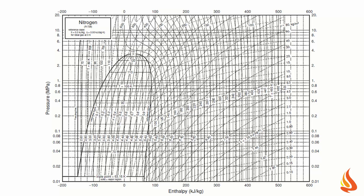The first step is to locate the point that corresponds to the condition of the input stream. It is at the intersection of the line of constant pressure equal to 0.1 MPa with the line of constant temperature equal to 240 kelvin. It is the green dot on the diagram.